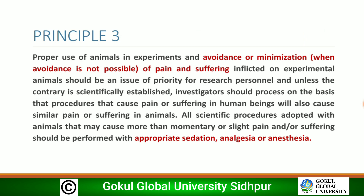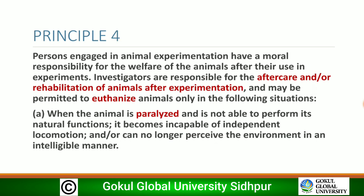Principle 3: Proper use of animals in experiments and avoidance or minimization of pain and suffering should be a priority for research personnel. Unless the contrary is scientifically established, investigators should proceed on the basis that procedures causing pain or suffering in human beings will also cause it in animals. All scientific procedures that may cause more than momentary or slight pain should be performed with appropriate sedation, analgesia, or anesthesia.